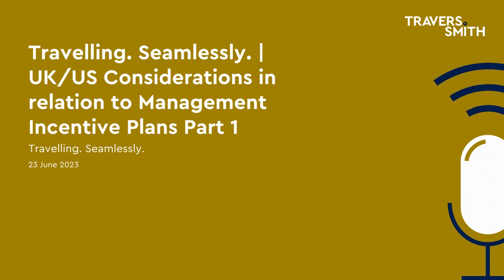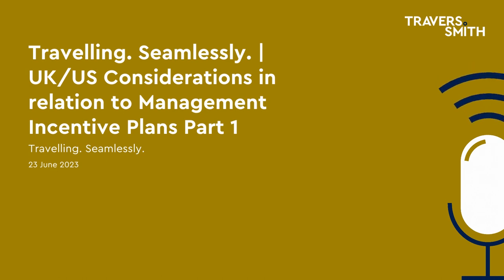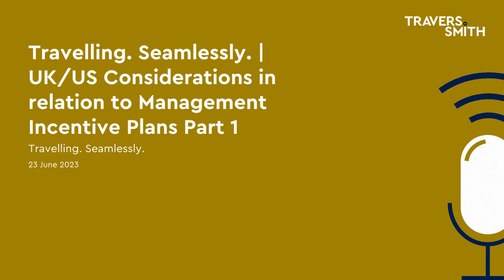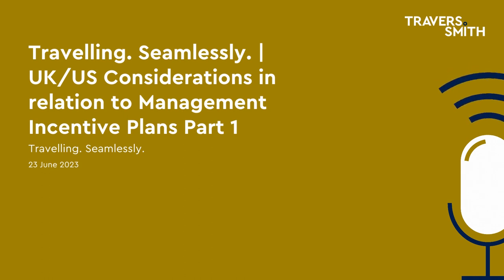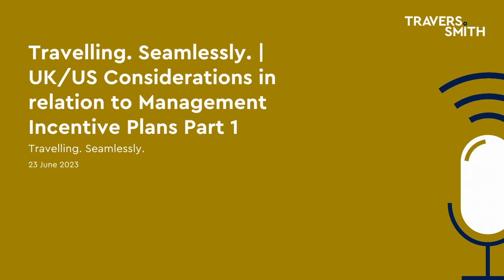Now moving on to talk about what we need to think about when setting up a MIP in the UK and the US. In both jurisdictions, the aim will be to set up an incentive plan with an affordable acquisition cost without triggering any tax charges and with the intention of achieving capital gains tax treatment, certainly in the UK. In the UK and most other jurisdictions, a capital return is usually taxed at a lower rate than income. In the UK, the difference is between a 20% rate on capital versus a 45% rate on income returns. Is there a similar distinction in the US?